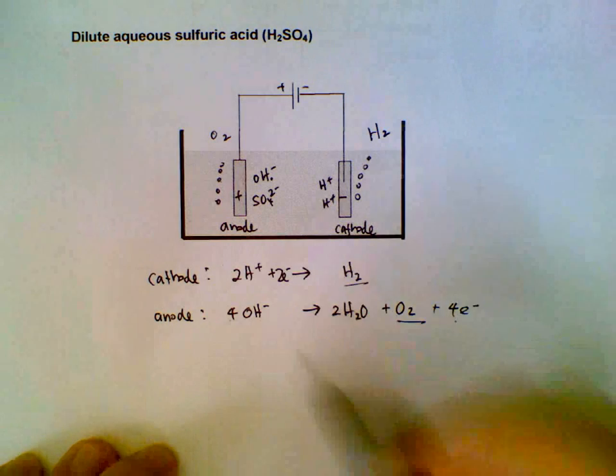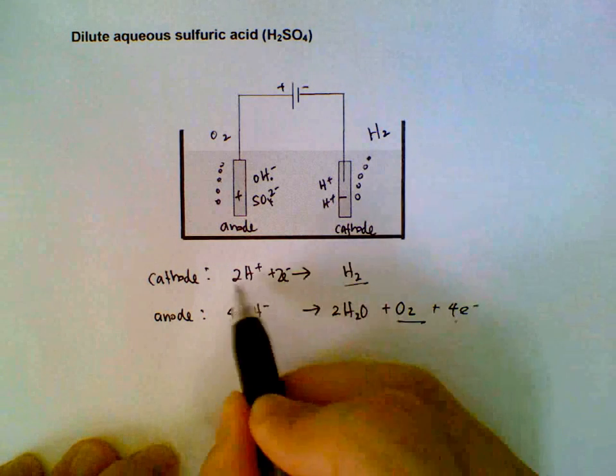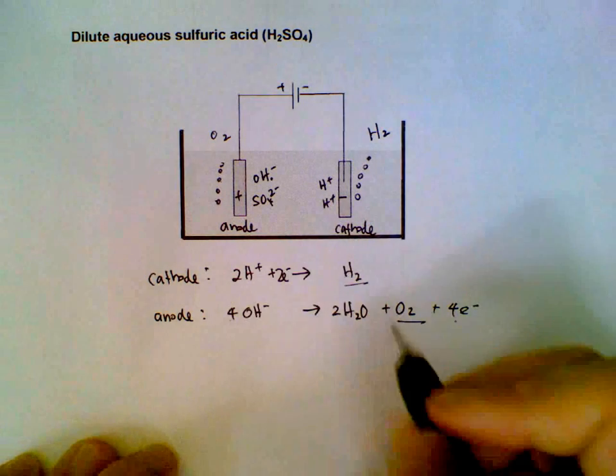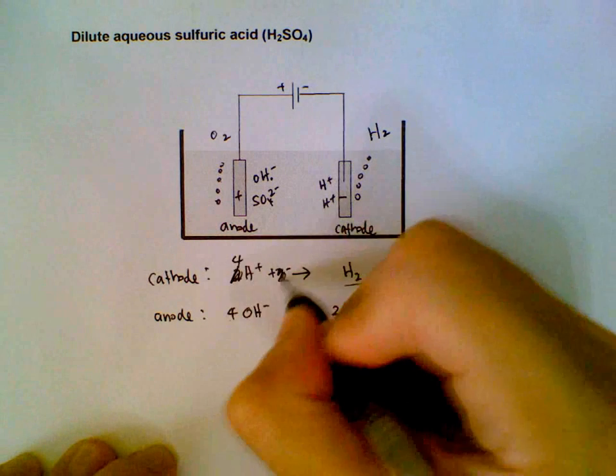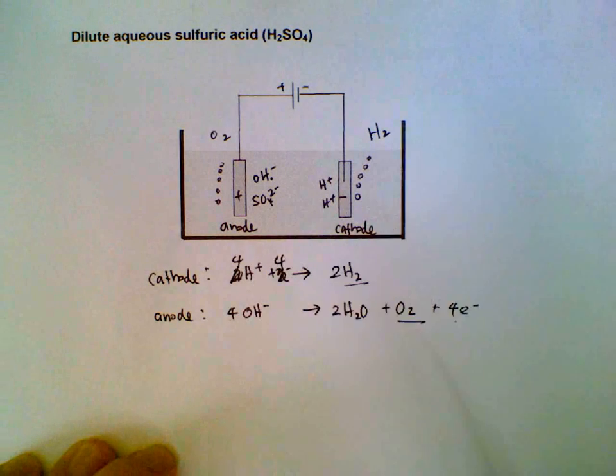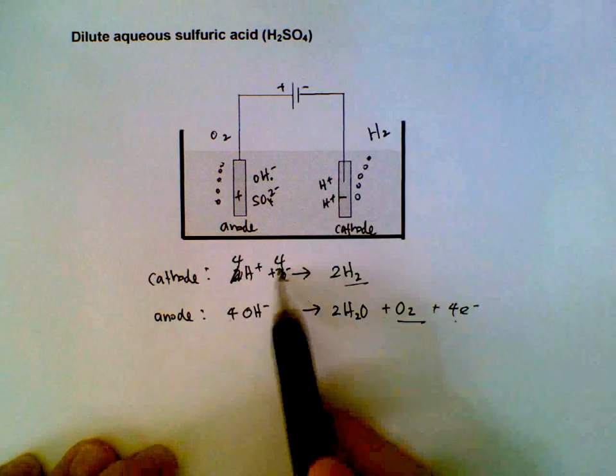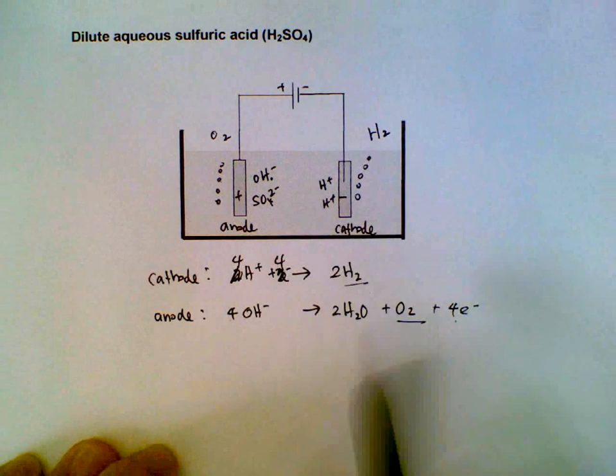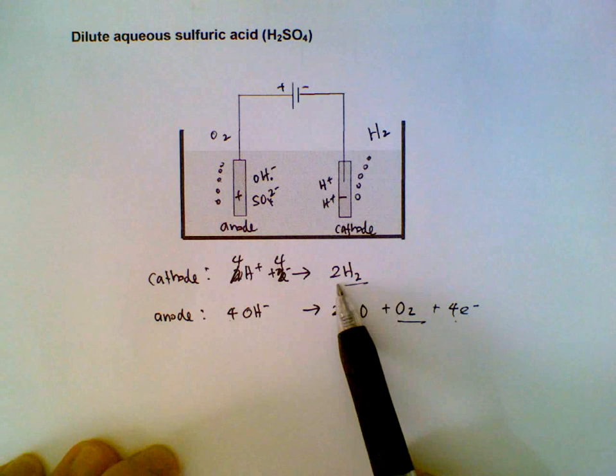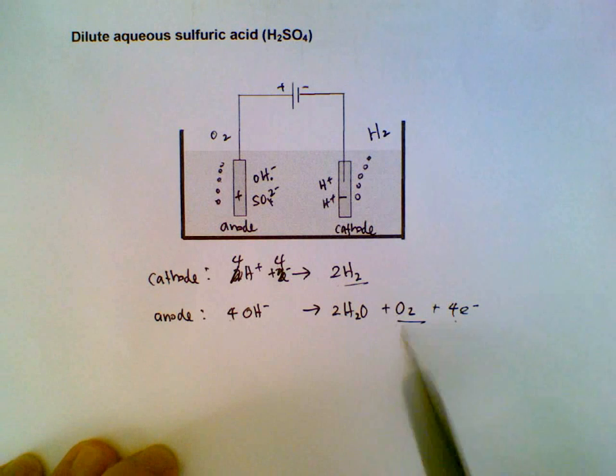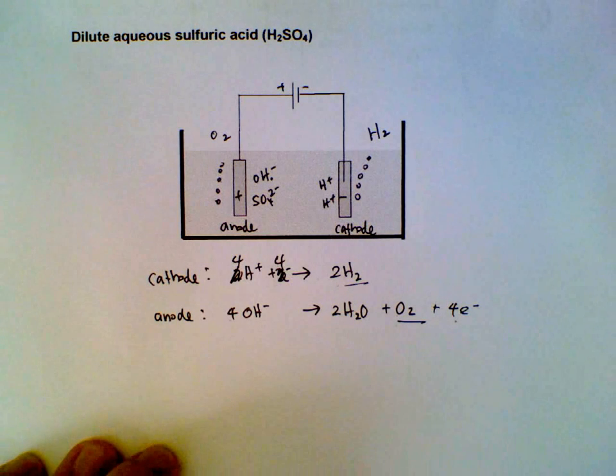So for comparison purposes, I'll multiply the first half equation by two. We get 4H+, 4e-, 2H2. Now the electrons are the same, we can do a direct comparison. For every two moles of H2 gas collected, you get one mole of O2 collected.